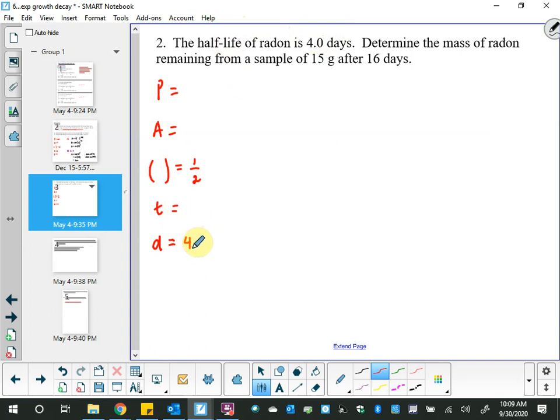It says determine the mass of radon remaining from a sample of 15 grams, and I'm going to put grams here so I don't have to necessarily reread again, after 16 days. So what's important is that this and this have the same units. You don't have to write it down, but you do have to mentally check that.